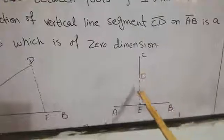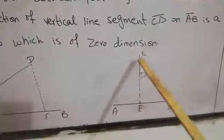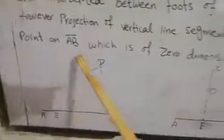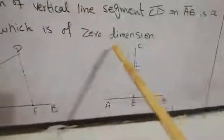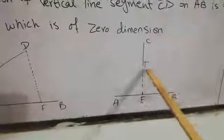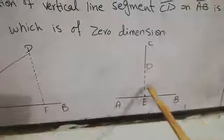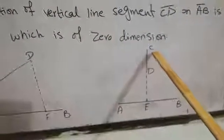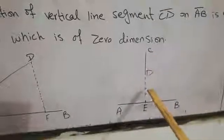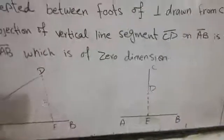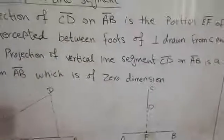This is actually a point — point E — and DE is the projection of CD, which is also called the zero dimension. Now we will move on to chapter number 9.